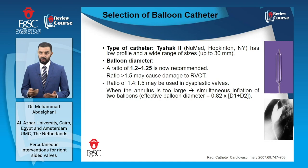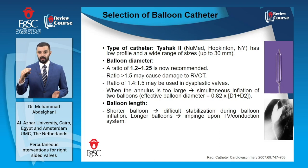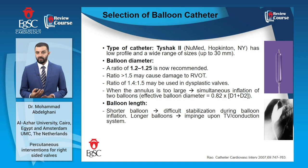Regarding balloon length, a longer balloon is easier to centralize during dilatation, eventually achieving a more effective dilatation of the valve. However, a longer balloon is more prone to cause injury to the tricuspid valve apparatus or to the conduction system. Therefore, in patients with small body habitus, such as small infants, a slightly smaller balloon length should be used.